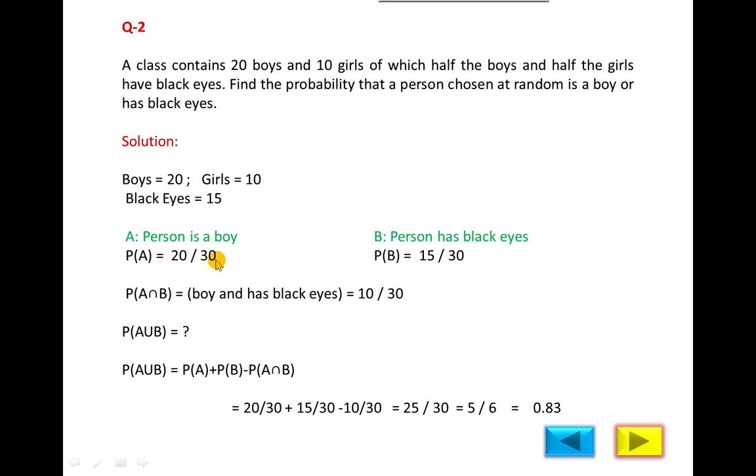So probability of A is 20 upon 30, probability of B is 15 upon 30, but what is the probability of A intersection B? How do we find this? This is the intersection of A and B, common of boy and black eyes. Intersection means common, occur in both: boy and also has black eyes.